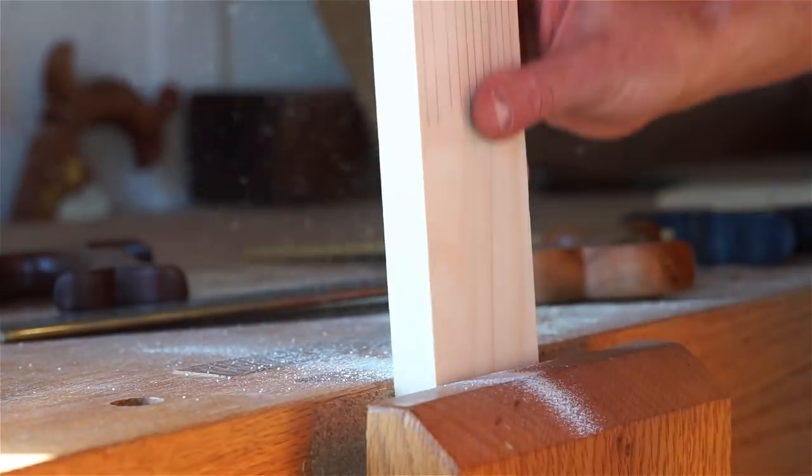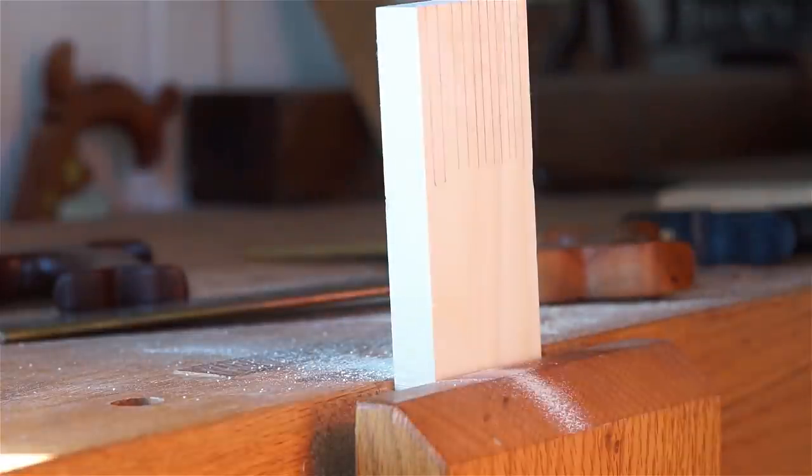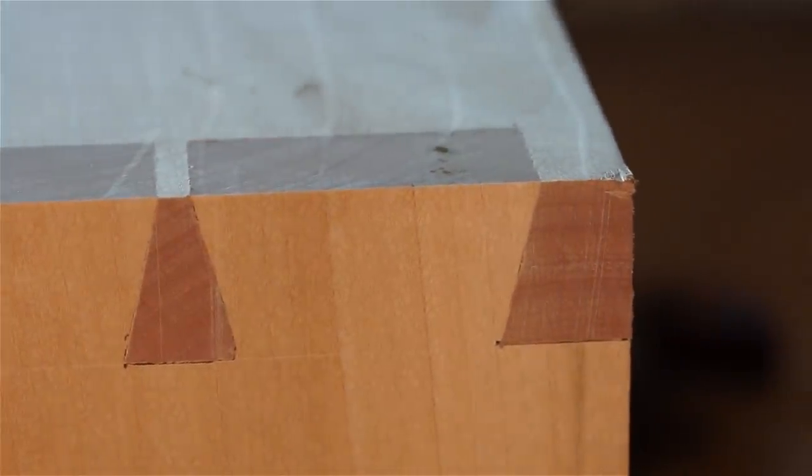After mastering cutting straight on the pencil line I ask my students to flip the board around and kick it up a notch by trying to cut right next to the line. In this sawing exercise you would just leave the pencil line and nothing else. This is the key to tight fitting dovetail joints where you'll have very little chisel work to do to get the tail board and pin board to fit together nicely.